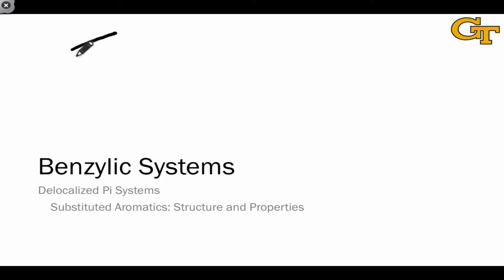In a previous lesson, we encountered the allylic pi system, which consists of a double bond adjacent to a CH2 group bearing cationic, anionic, or radical character.